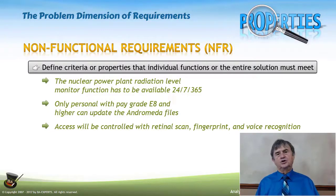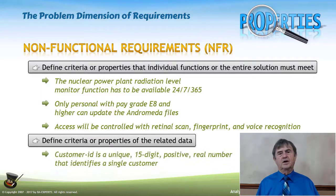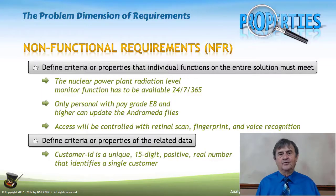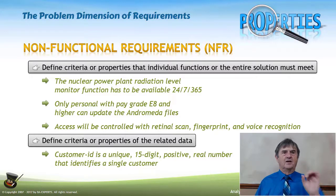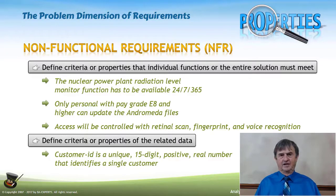Non-functional requirements don't just affect functions — they can also affect the data. Statements such as: a customer ID is a unique, meaning non-recurring, 15-digit, positive real number that identifies a single customer. Those are non-functional dimensions to what the customer ID actually is. They're non-functional because they have to be enforced, but they are not doing anything or knowing anything about the application.